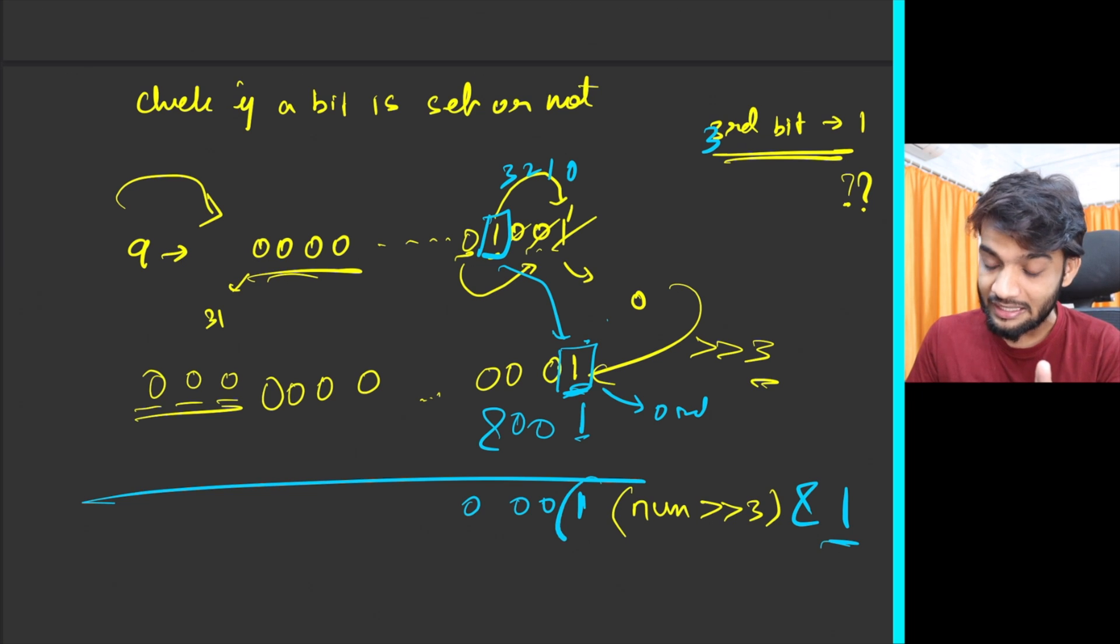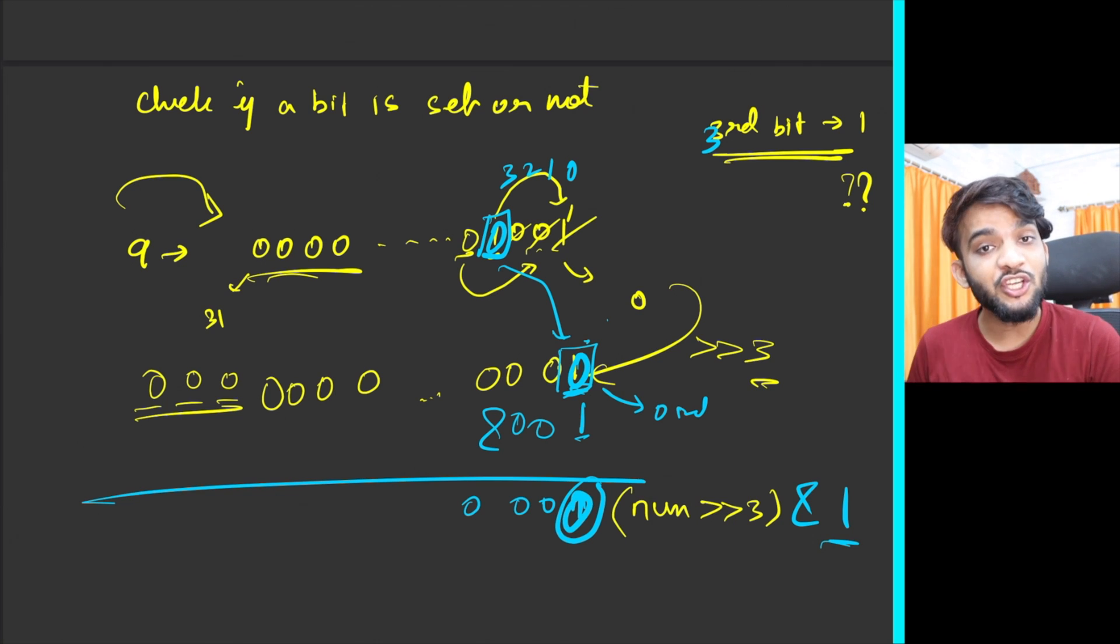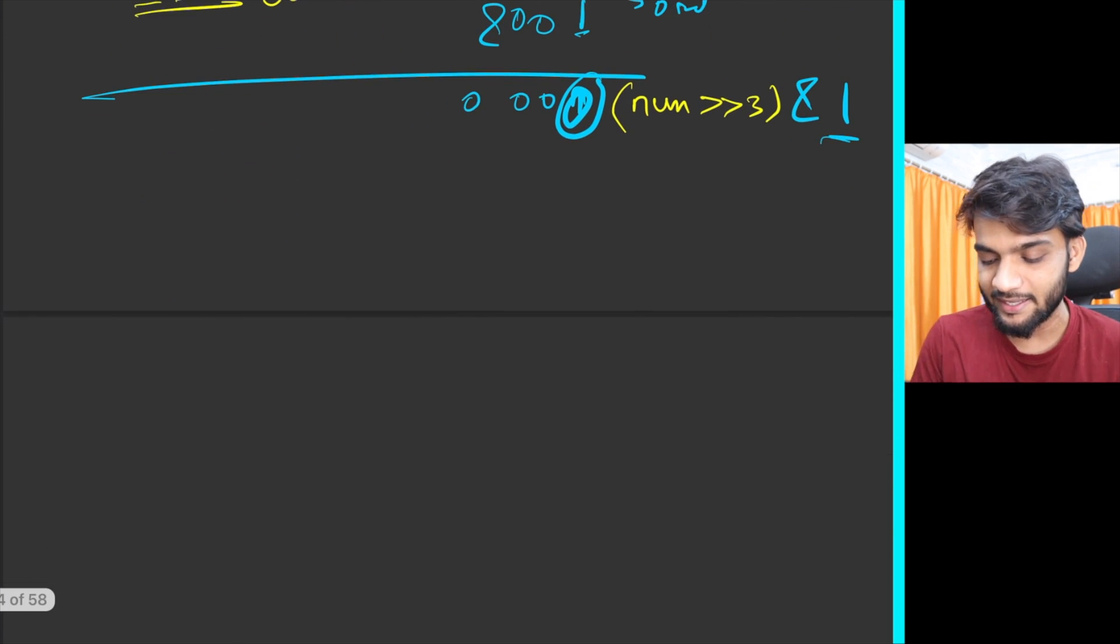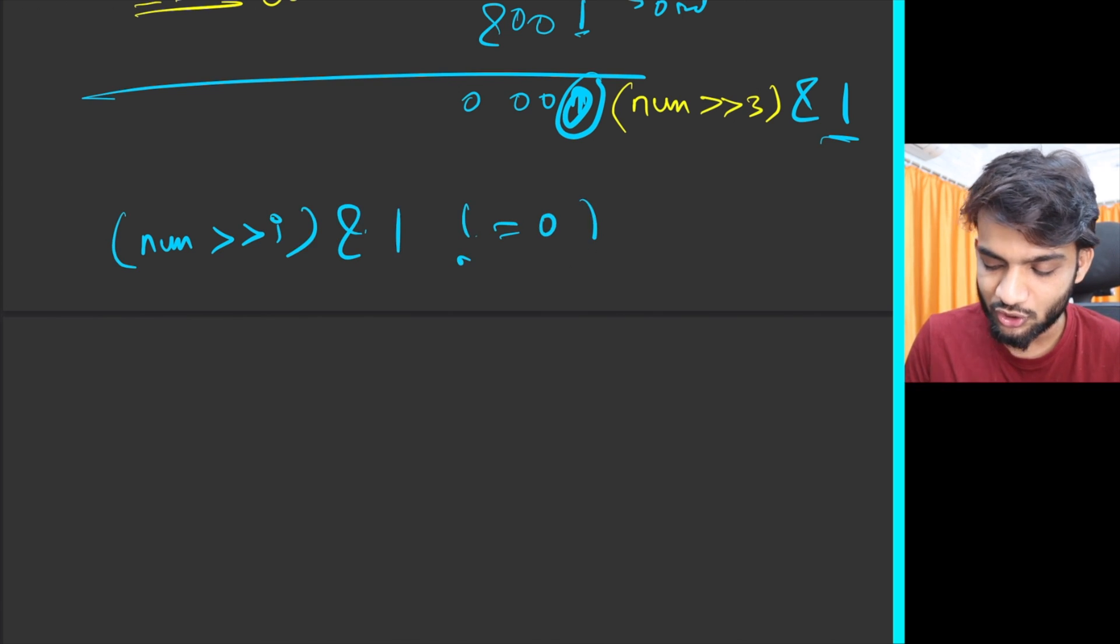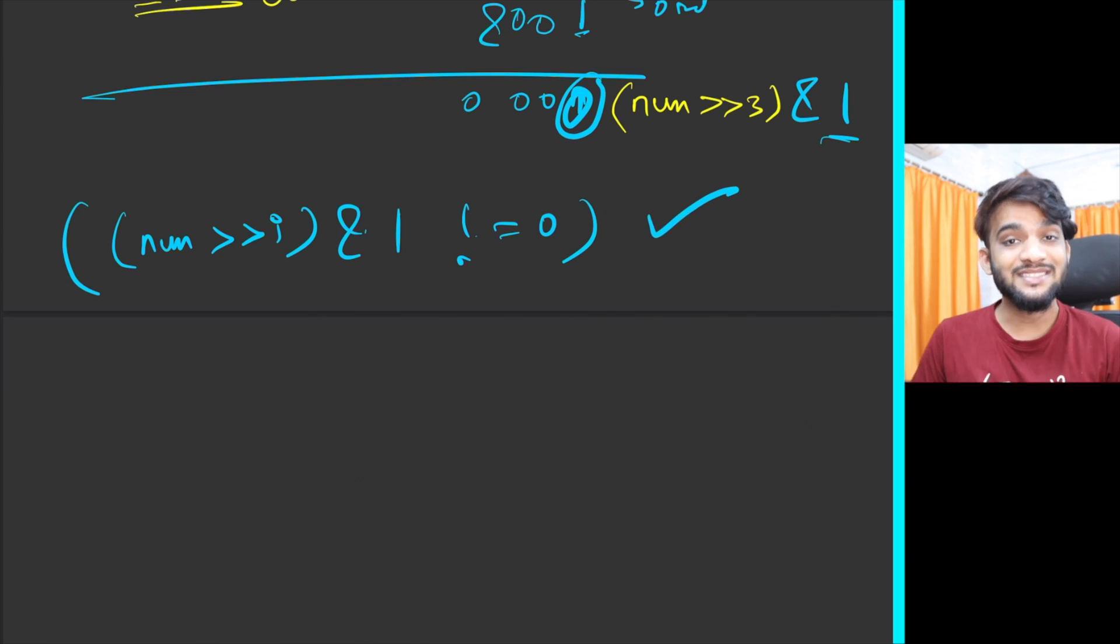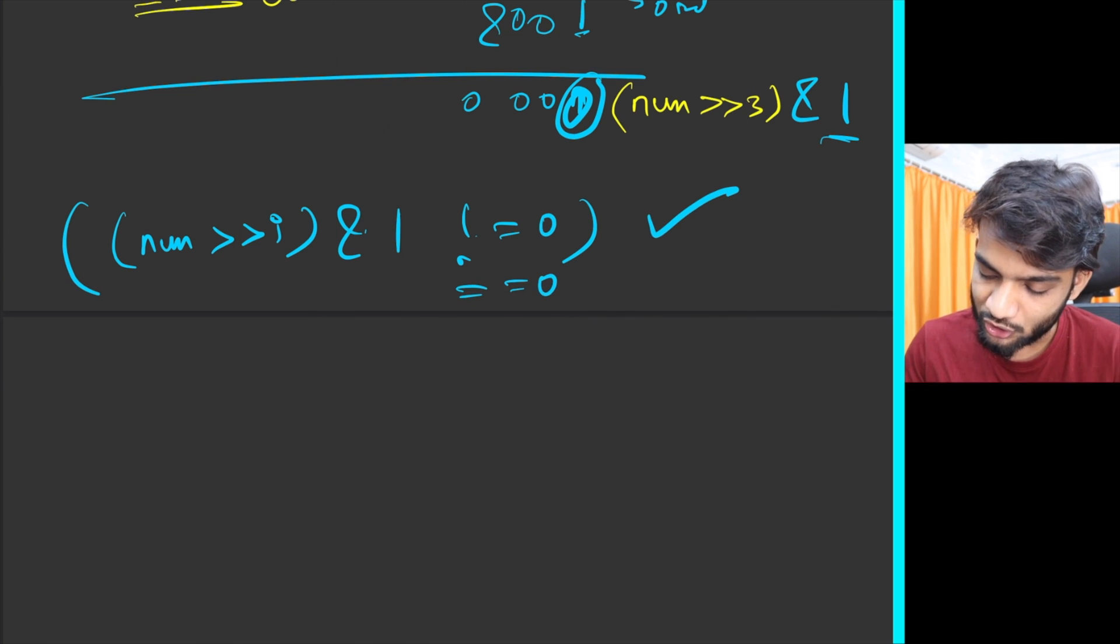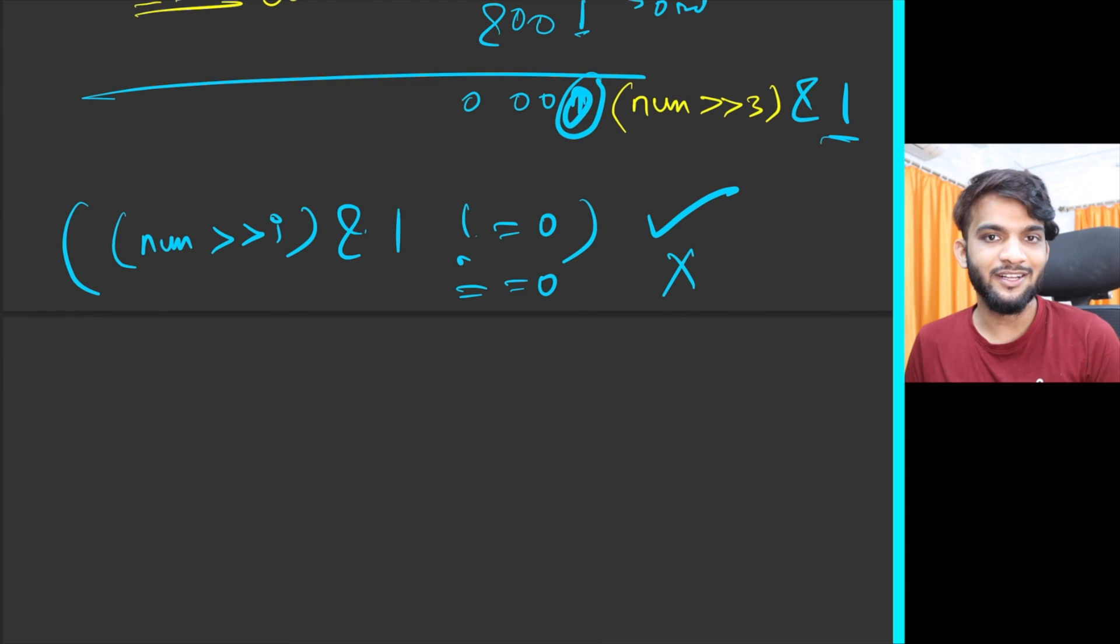Rest all will be zeros. Whenever I say one, in binary it means 000...0001. All will be zeros, but if this bit is set, which means if it is one, this will yield a one. If this would have been zero, this would yield zero.